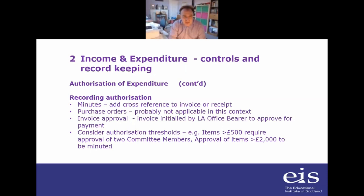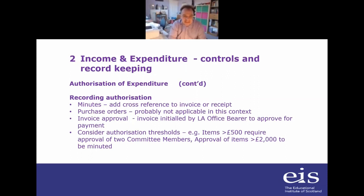In an ideal world you have purchase orders, but we very rarely use them at HQ and I would not encourage a system of purchase orders at local association level — it's easier just to minute things. Invoice approval is quite useful: if you receive invoices, have them initialled by an LA office bearer to show they've been approved for payment, particularly for anything non-recurring.